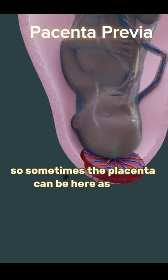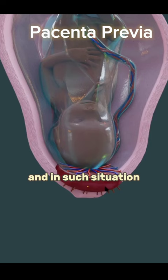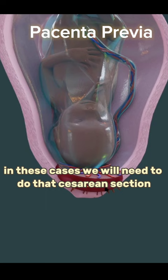Here, near the cervical opening, if the placenta is implanted near the cervical opening, that is a dangerous situation. It can lead to bleeding during late pregnancy, and in such a situation, normal delivery will be almost impossible — in these cases we will need to do a caesarean section.